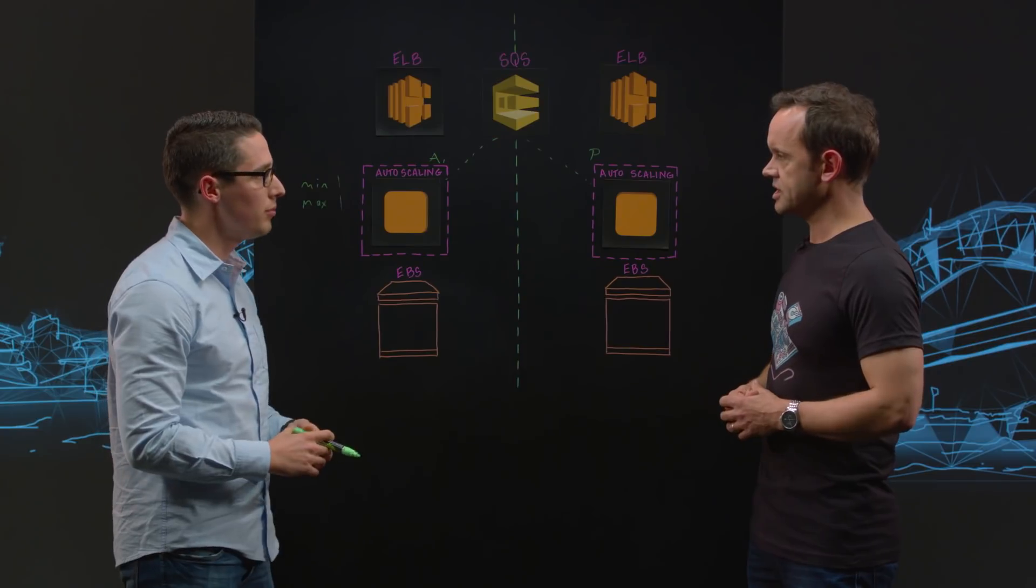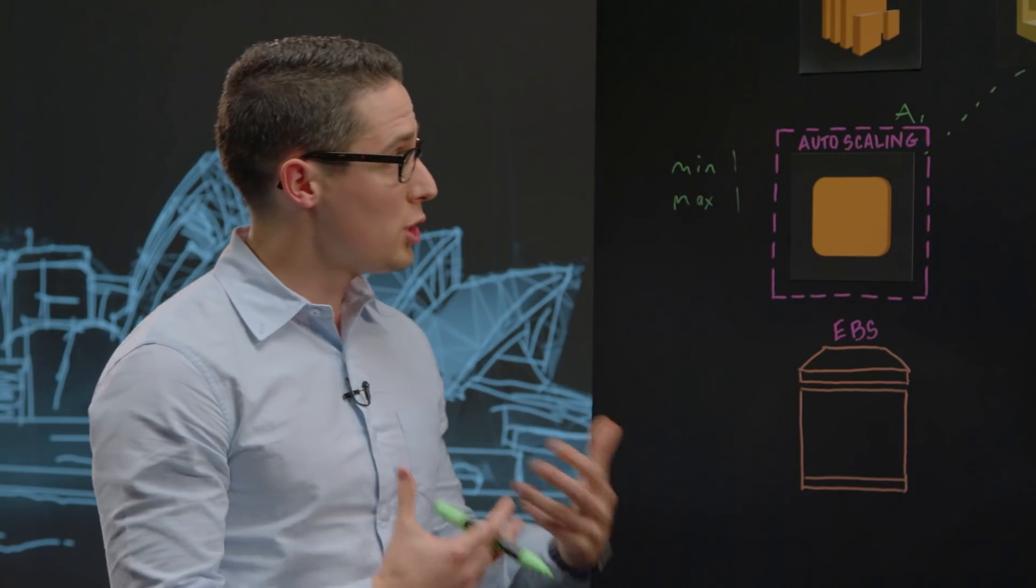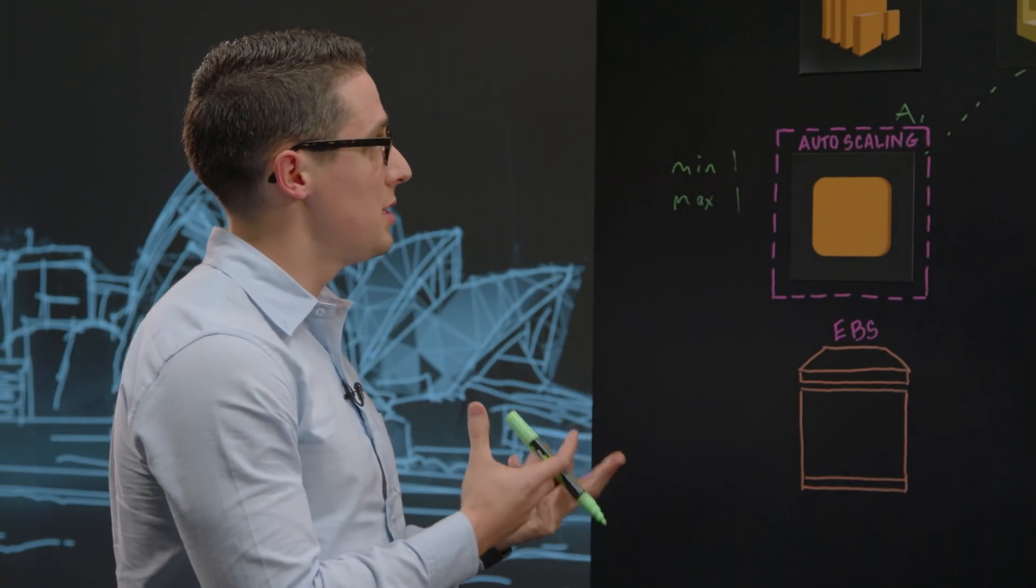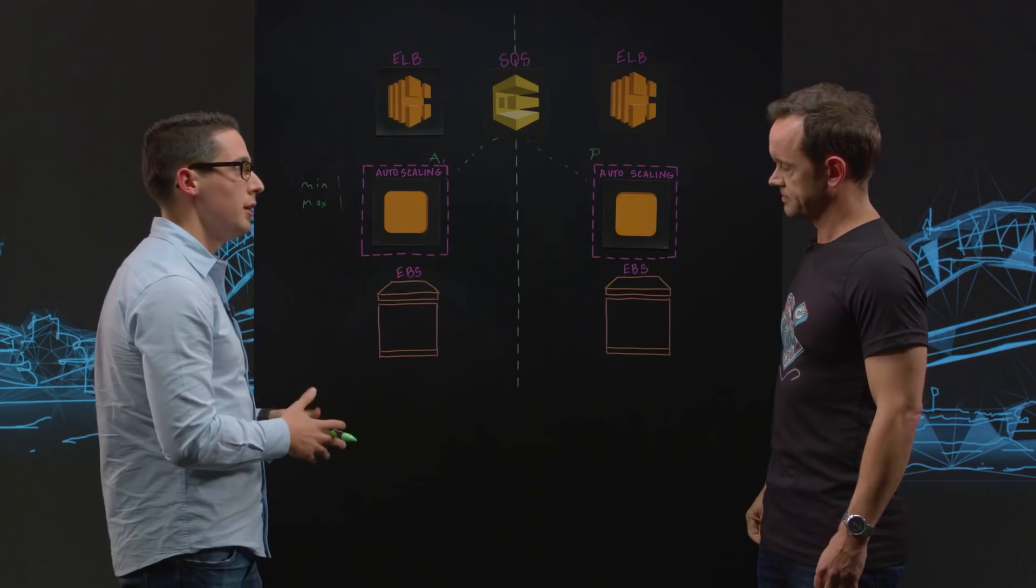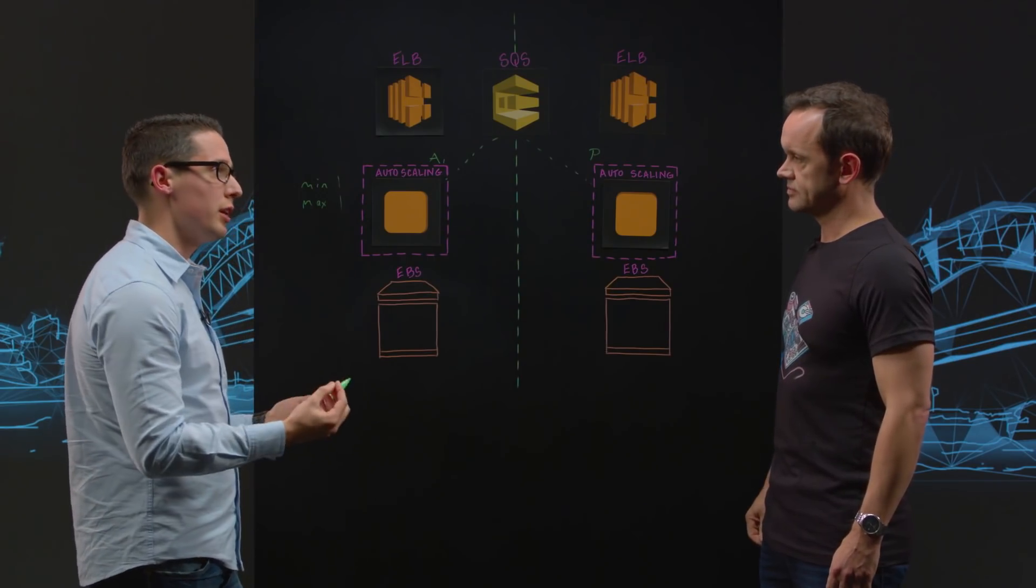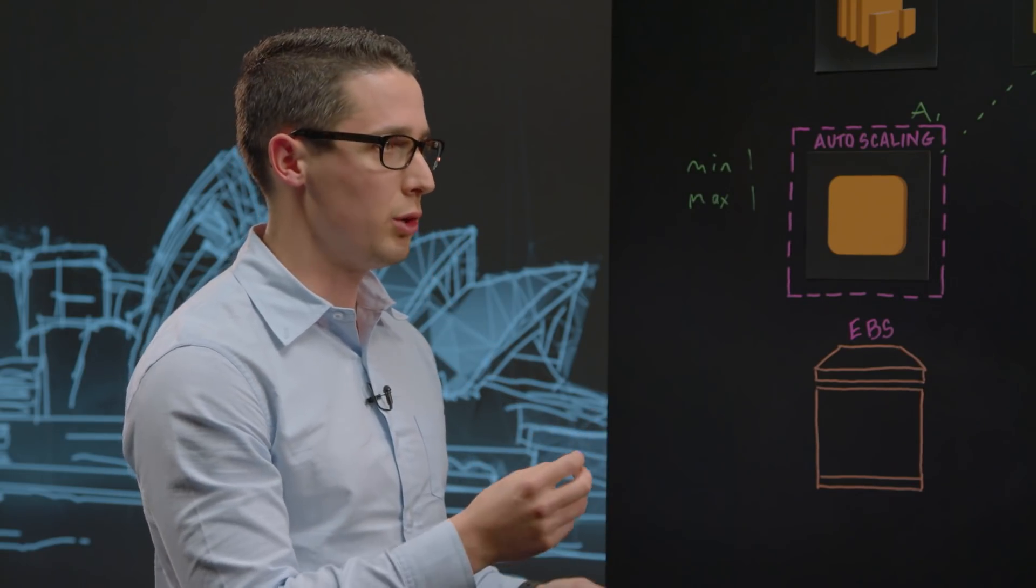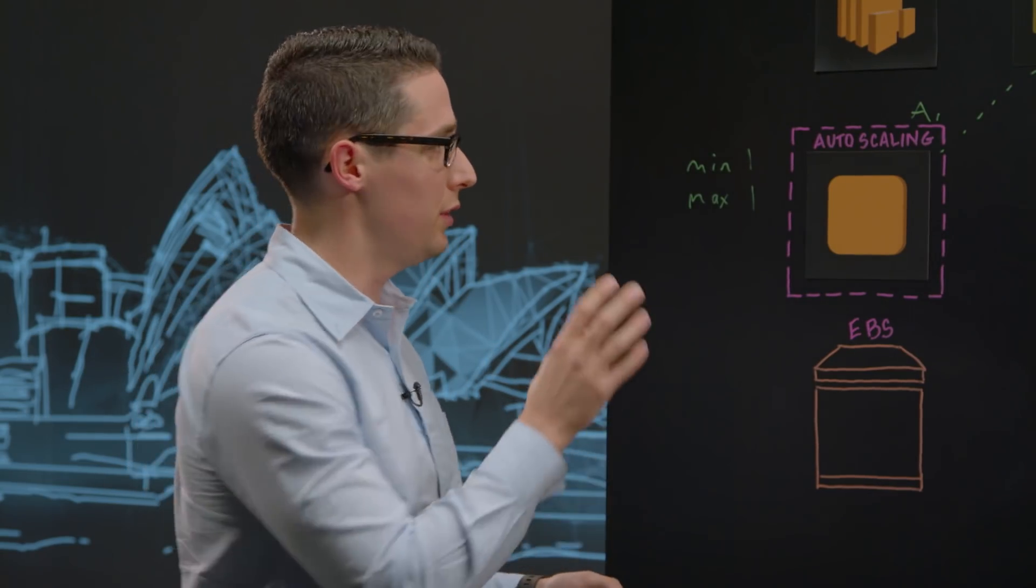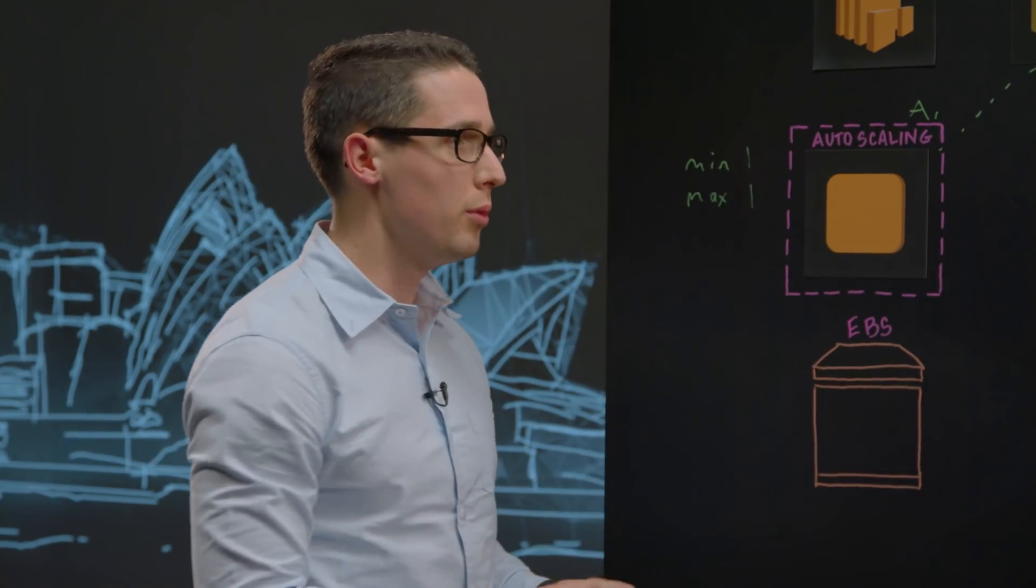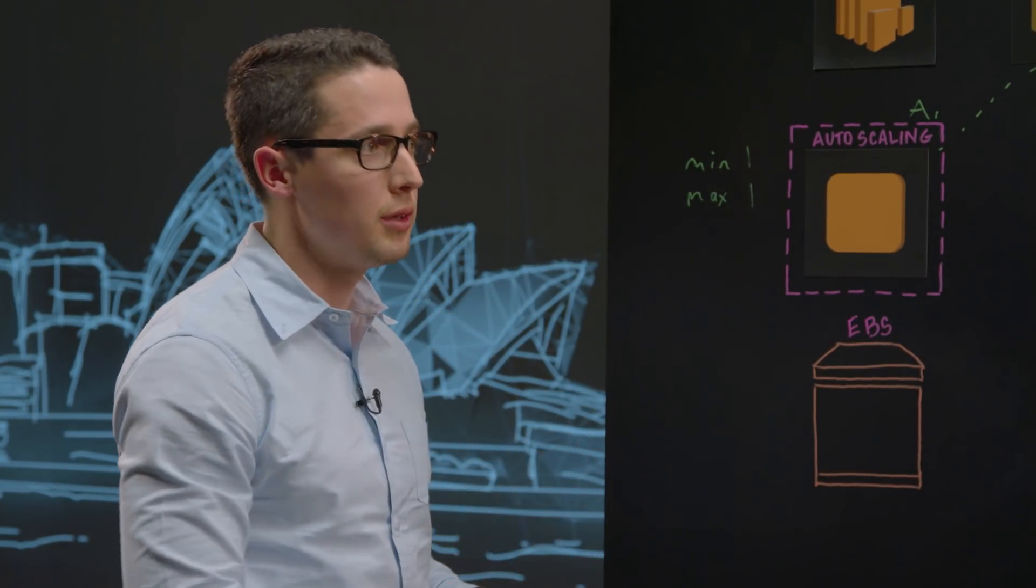And we've got some ELBs up there as well. Can you tell us what function they serve? So essentially their purpose is just for health checking. So because you can configure the health check parameters on an ELB to be quite low, this allows us to tune them quite aggressively to ensure that in the event that an instance fails, it will recover quite quickly.